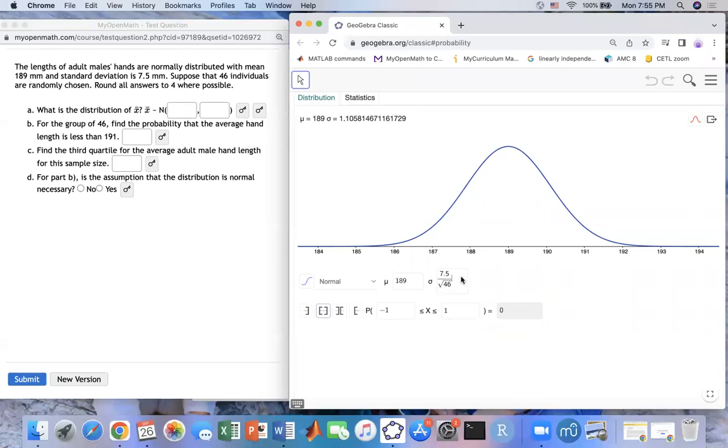So after you do this, I'm going to show your answer right here. So this is what you put for the mean right here. That would be 189. And this one would be 1.1058. They want four decimal places, so you have to do right here.